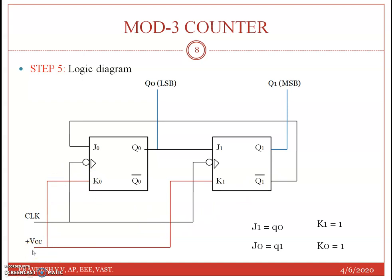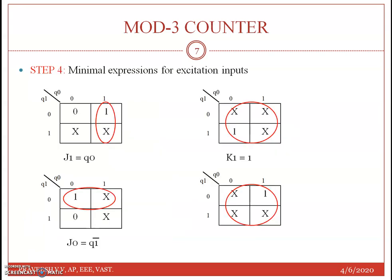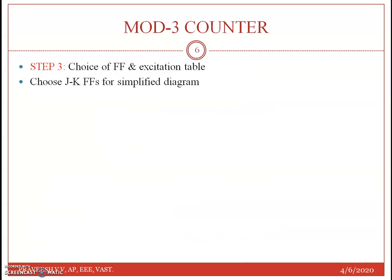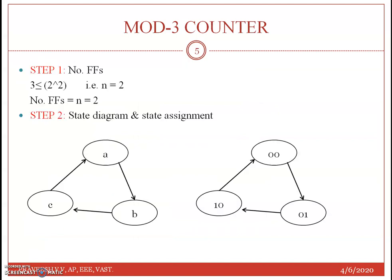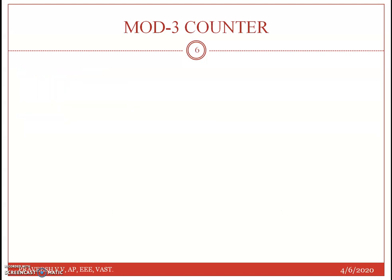This gives us the implementation. The logic diagram uses two JK flip-flops with a common clock (negative-edge triggered). J1 is connected to Q0, K1 is tied to VCC (logic 1). J0 is connected to Q1 complement, and K0 is tied to VCC. The output Q1 and Q0 provide the 2-bit count sequence cycling through 00, 01, 10.